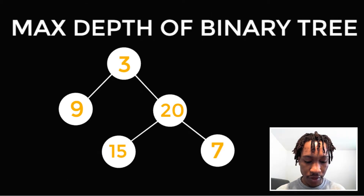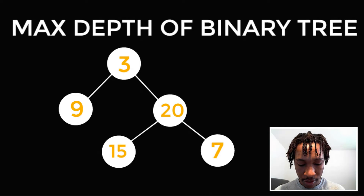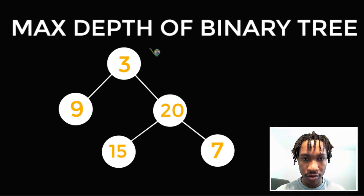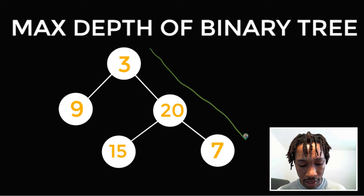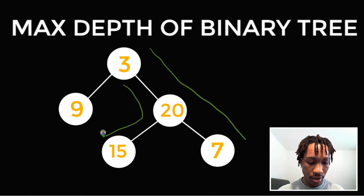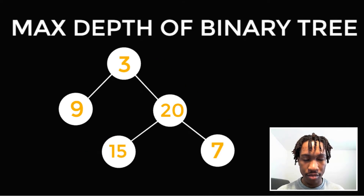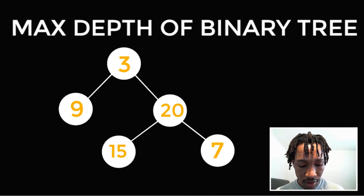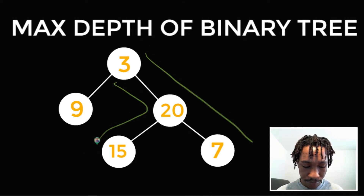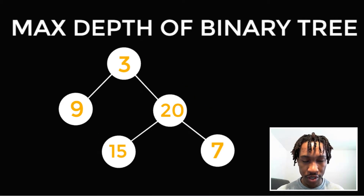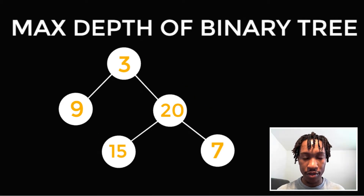So what exactly is a binary tree depth? For example, this branch right here all the way to the null nodes is a depth. And then this branch right here all the way to the null nodes is also a depth. We should find the maximum depth — it would be either this or this. Both of those branches have a depth of three, and we return one of those.